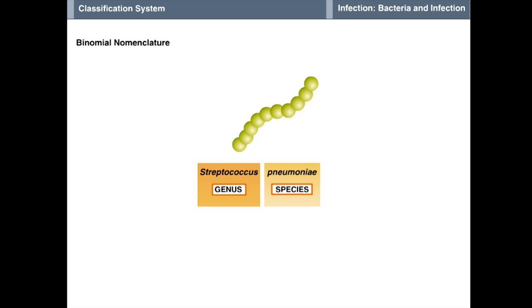In standard usage, the genus is always capitalized, while the species is not. Additionally, the genus name is written out the first time it appears in a document, but is then abbreviated as a single initial thereafter. Thus, Streptococcus pneumoniae becomes S. pneumoniae.